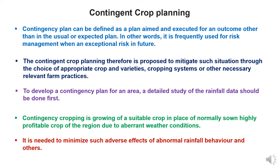Contingent crop planning refers to a plan which is in place in advance to mitigate the risk associated with crop production in adverse situations. A contingency plan can be defined as a plan aimed and executed for an outcome other than the usual or expected plan. In other words, it is frequently used for risk management when an exceptional risk in the future is prevalent.